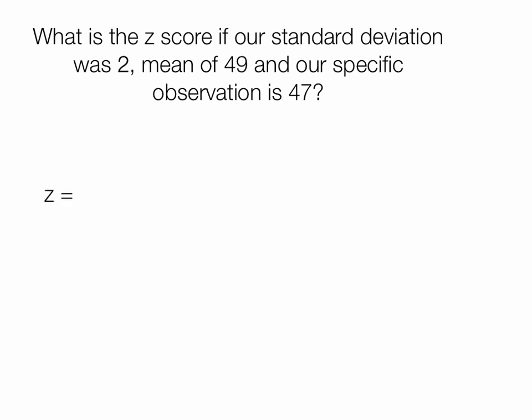We have our z-score is equal to the observation minus the mean divided by the standard deviation. Our observation is 47, our mean is 49, and our standard deviation was 2, which yields a value of negative 2 divided by 2, which is negative 1. This means 47 is one standard deviation away from our mean of 49.